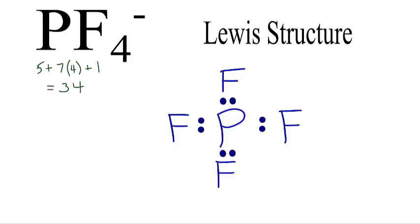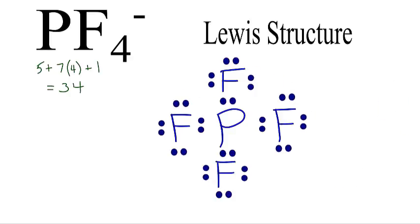Now, we'll go around and complete the octets on the fluorine atoms. When we do that, everything has an octet.